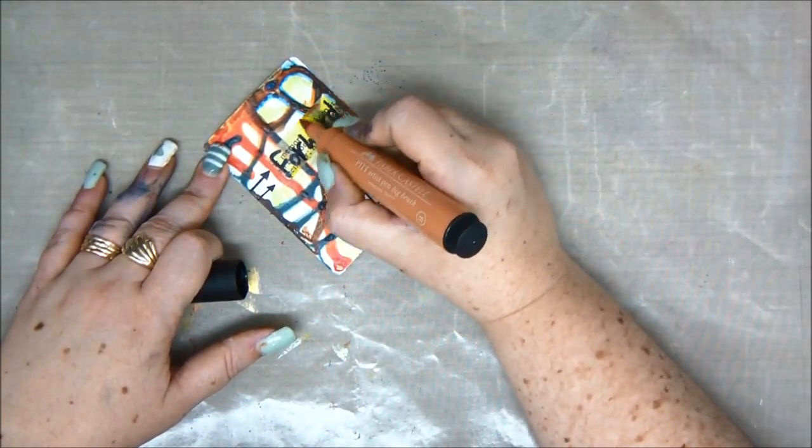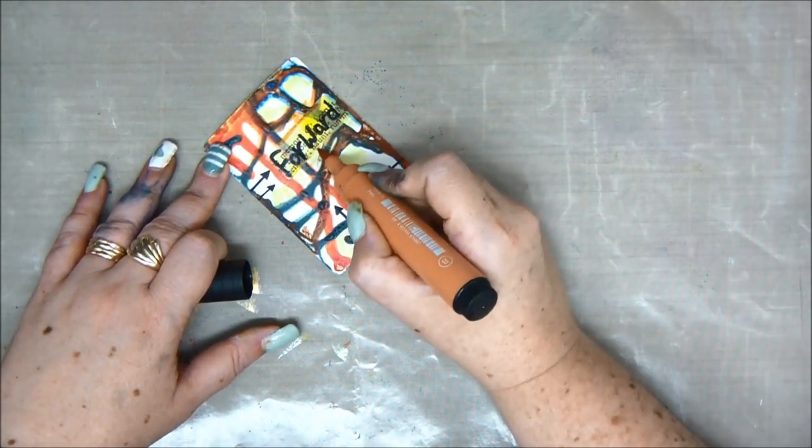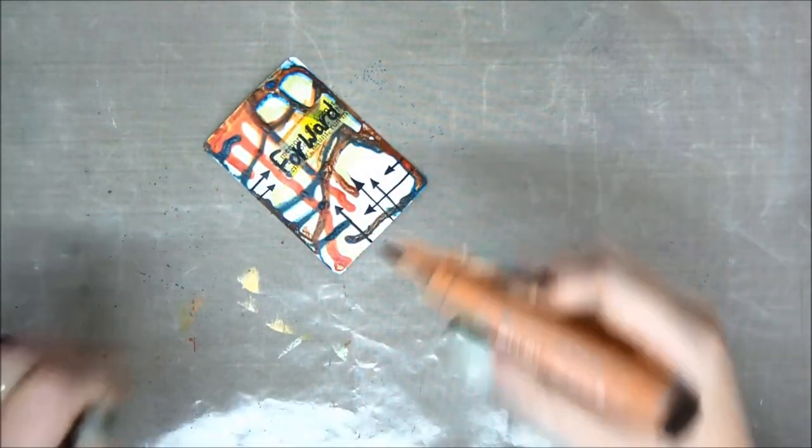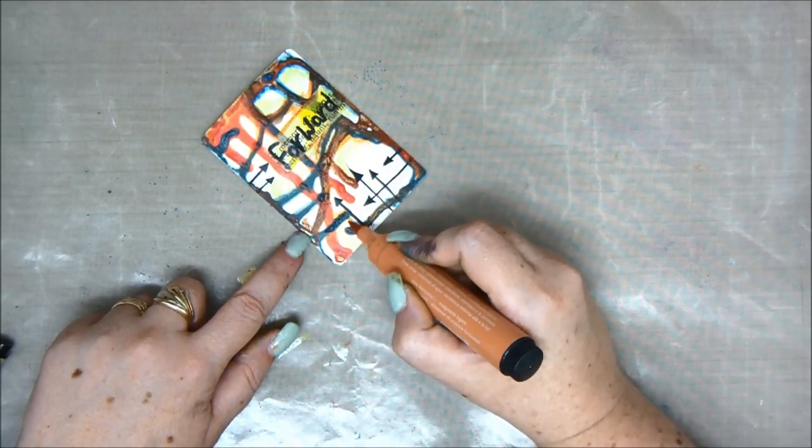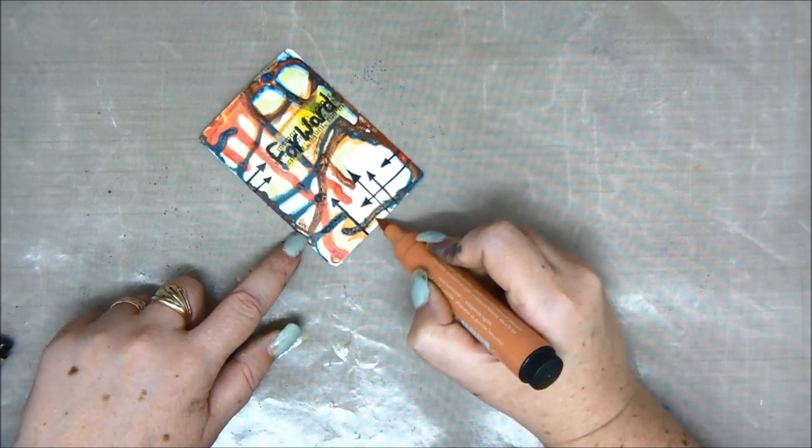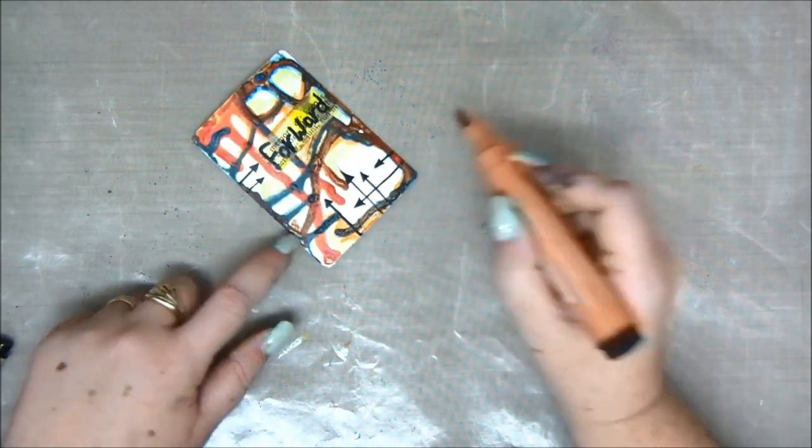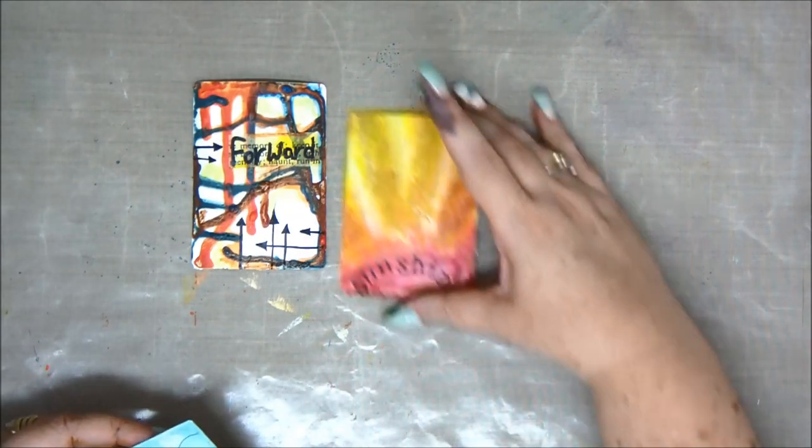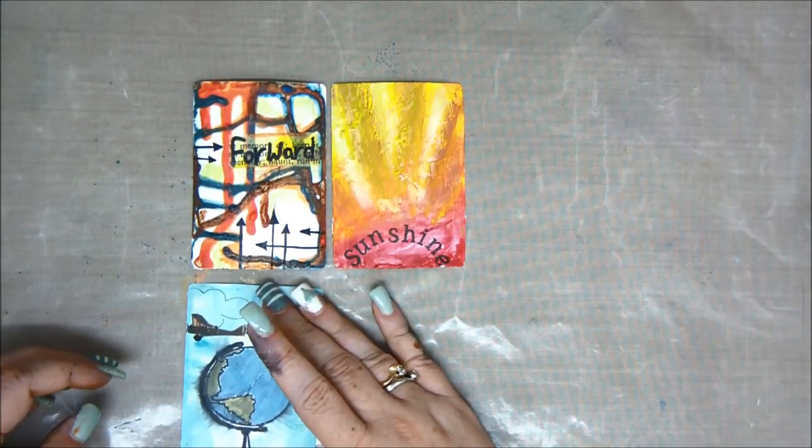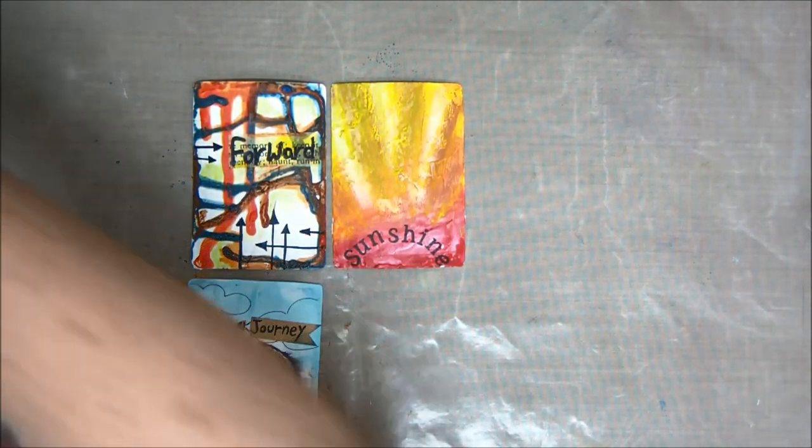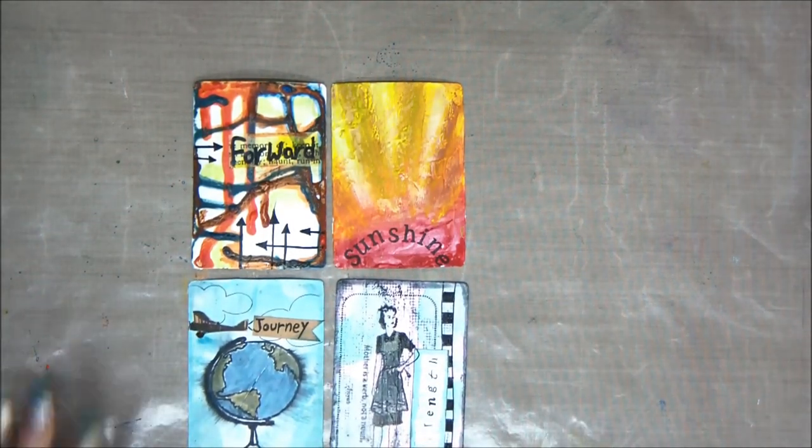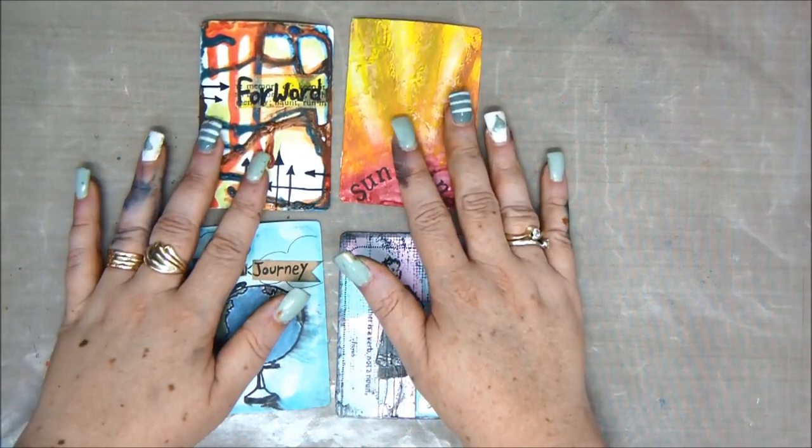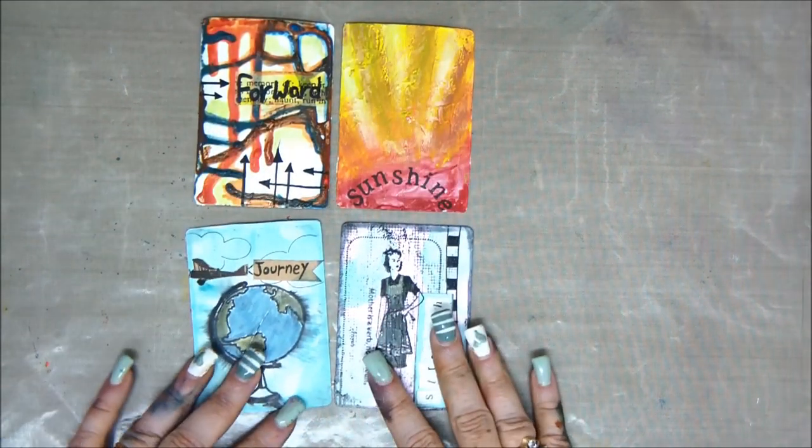I really like how this one turns out. All the dripping looks like a map of streets and roads. Here are our four cards that we've altered today. I really like how they turned out. I hope you like them too. If you want to watch all 52 cards, join the VIP room. Thank you very much for joining me.